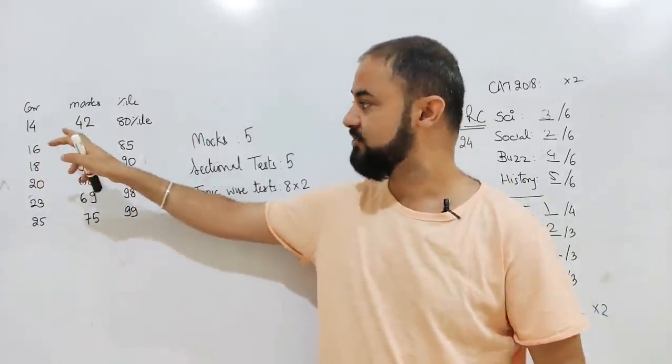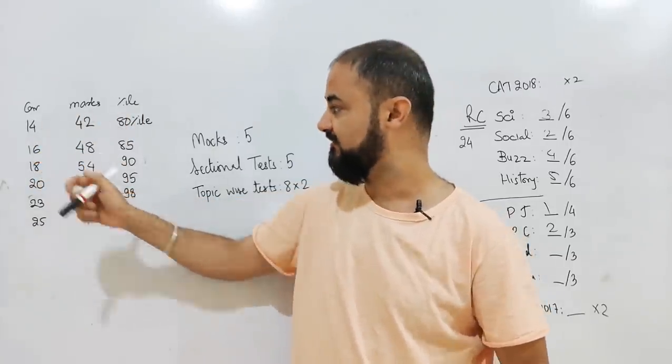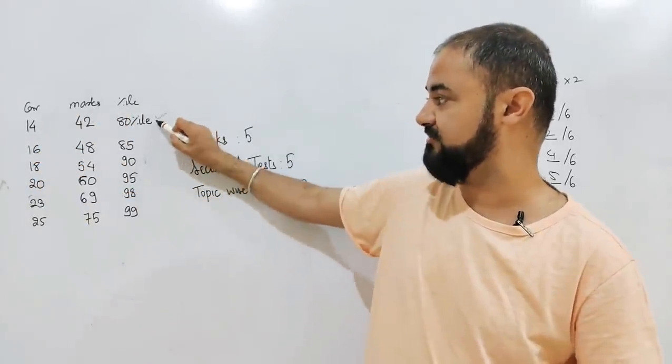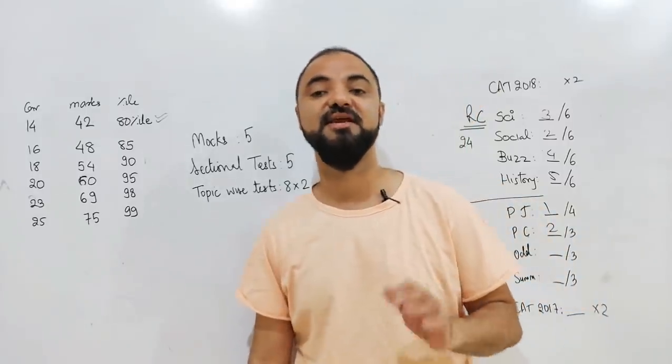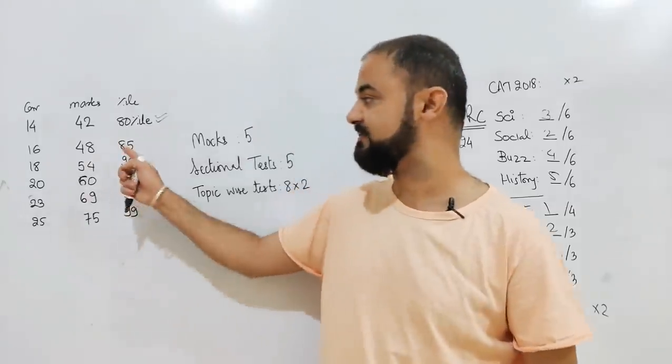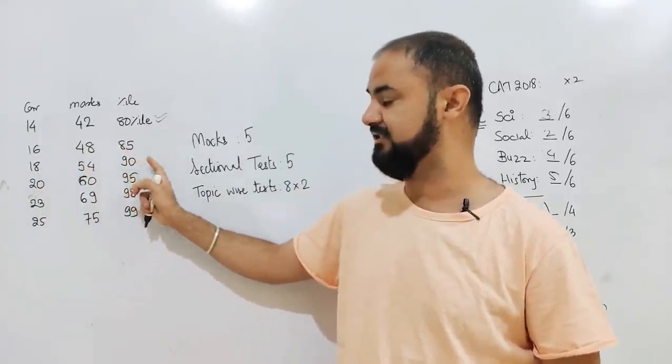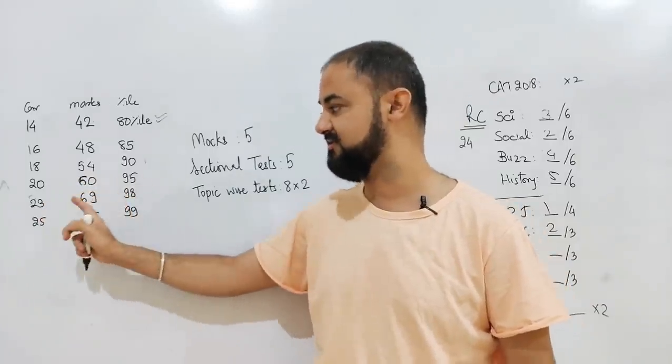Now, second part, we're going to look at the cutoffs. 14 questions correct is 80 percentile in the verbal section, which is clearing the cutoff for most of the IIMs. But obviously if you're targeting the main IIMs, you need to score more. But if you're very good in verbal and DI, even if you get 90 percentile, it's more than sufficient, which is 16 correct.